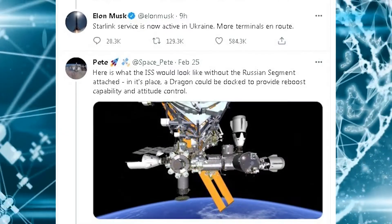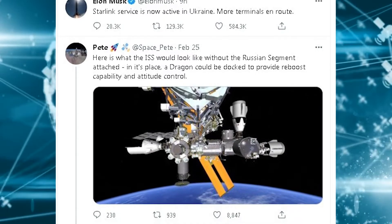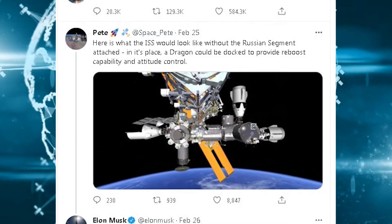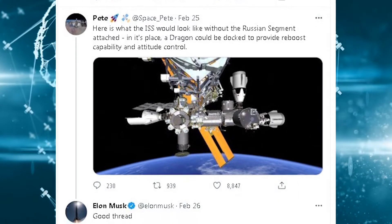He tweeted SpaceX's logo at a Russian official who threatened the International Space Station would fall out of the sky if Russia was cut from it. While Musk usually collects accolades for his proposals, it's worth pointing out that these efforts don't always pan out in practice.